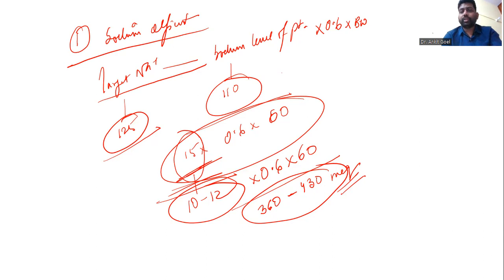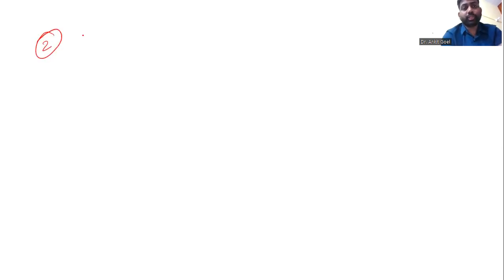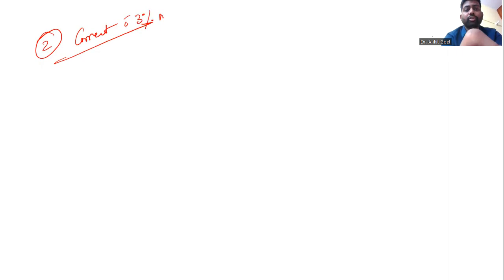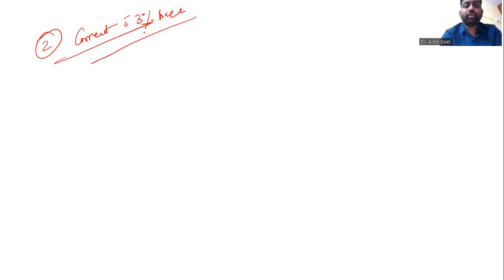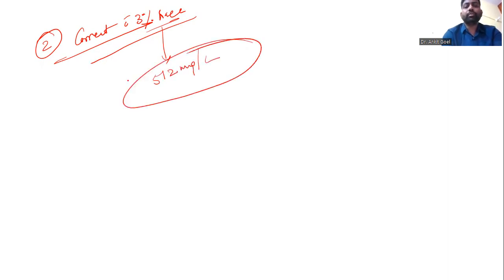Once you have found the sodium deficit, that was step one. Step two is how you correct it — you initiate correction with hypertonic saline, that is 3% normal saline. This 3% NaCl contains 512 milliequivalents of sodium per liter. So that is the concentration of sodium in 3% normal saline.